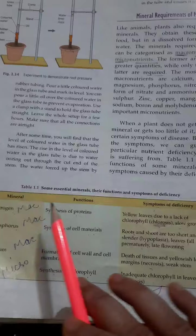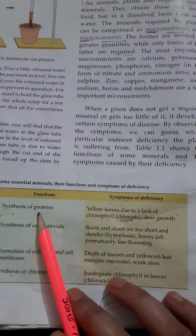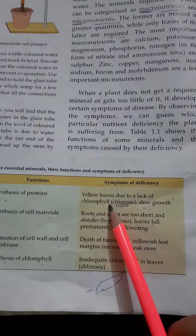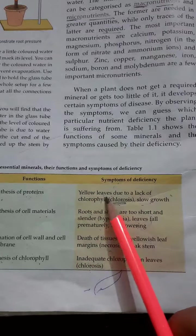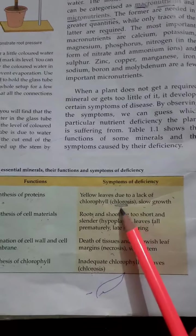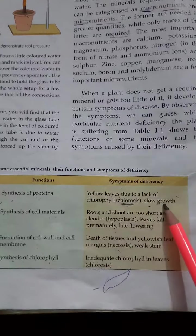For example, nitrogen is a macronutrient needed for the synthesis of protein. If it is deficient in plant, the leaves become yellow due to the lack of chlorophyll. It causes chlorosis and slow growth of the plant.